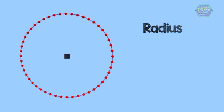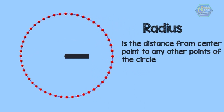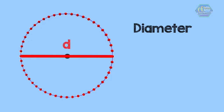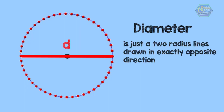Next is the radius. The radius is the distance from the center point to any other point on the circle. Another important part of the circle is the diameter. If you draw a line from one point of the circle to the center point and to the other side, that distance is called the diameter. In other words, the diameter is just two radius lines drawn in exactly opposite directions.